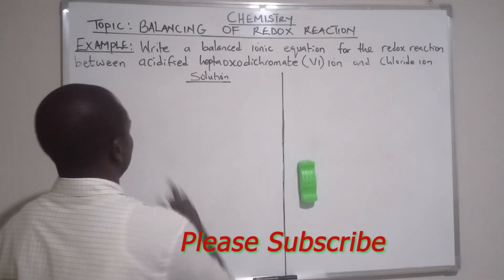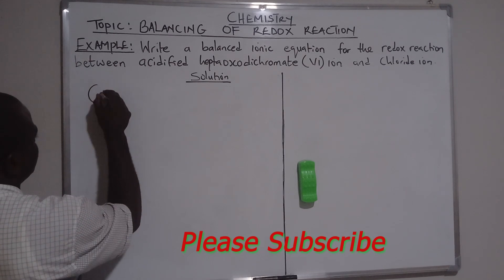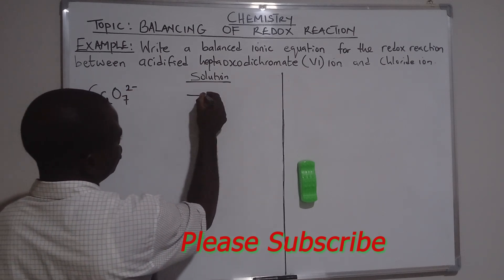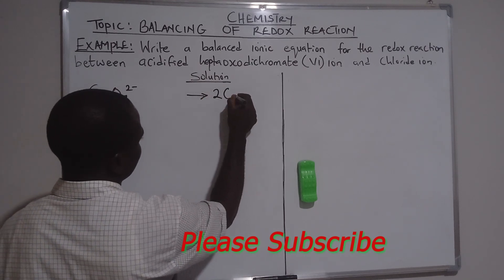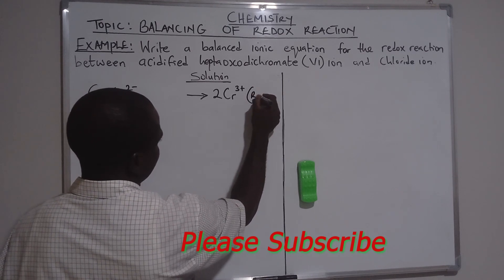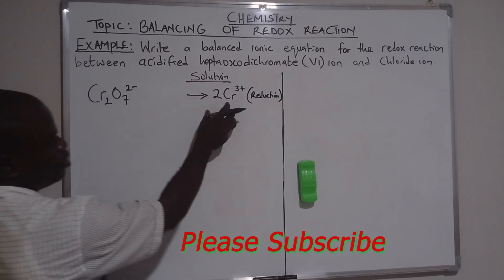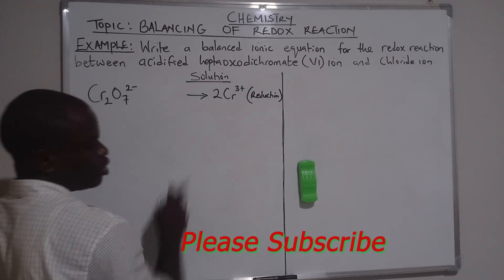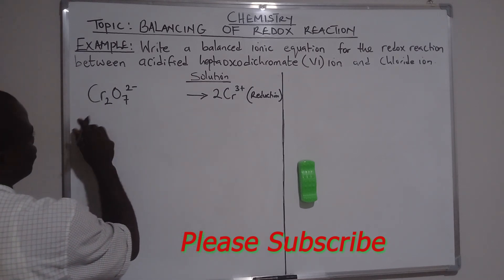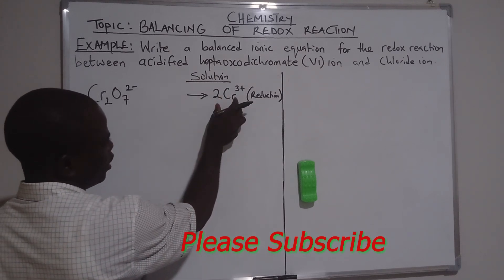We have Cr₂O₇²⁻ being reduced to 2Cr³⁺. This is a reduction. Why do we say this? The oxidizing agent has been reduced — oxygen is being given to another element, that is why it has been reduced. So we reduce to chromate ion on the other side.